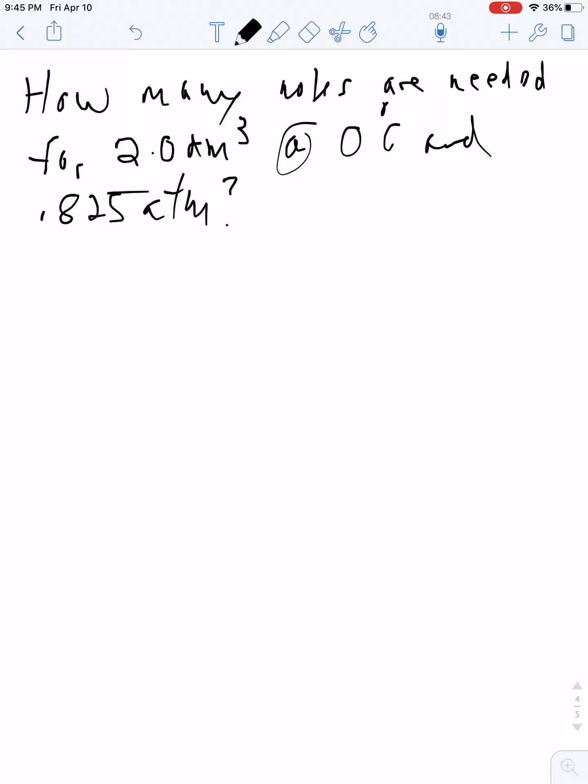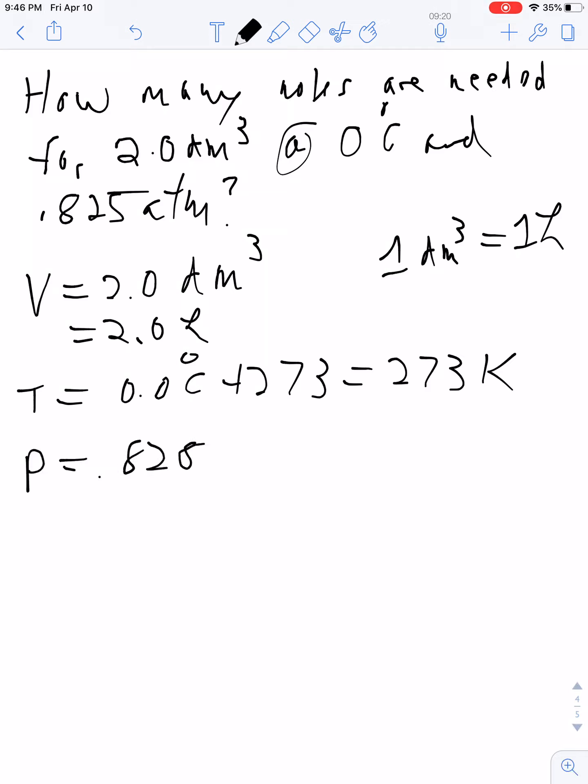The real problem is really units on all this stuff—that's why I say 90% of the time it's units. Let's write down our volume: 2 decimeters cubed. You need to know the relationship: 1 decimeter cubed is a liter, so my volume is 2 liters. My temperature is 0 Celsius, but go ahead right away and convert it to Kelvin by adding 273, so my temperature is 273 Kelvin. My pressure is 0.825 atmospheres, and I want to find the number of moles.